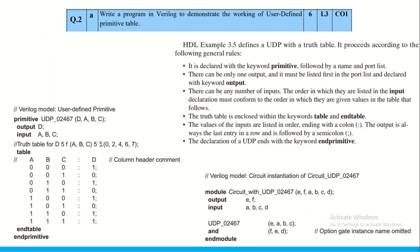The next question asks to write a program in Verilog to demonstrate the working of a User Defined Primitive (UDP) table. UDP is the concept expected here. In Verilog HDL, a UDP can be used — it means the truth table can be used directly.